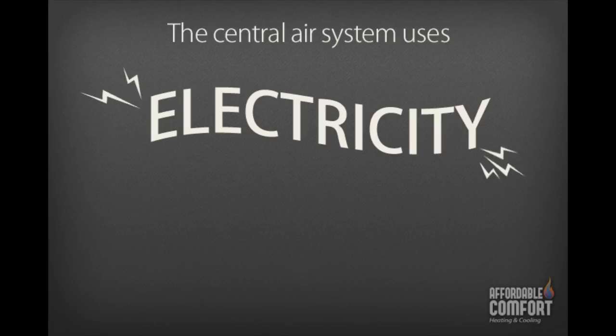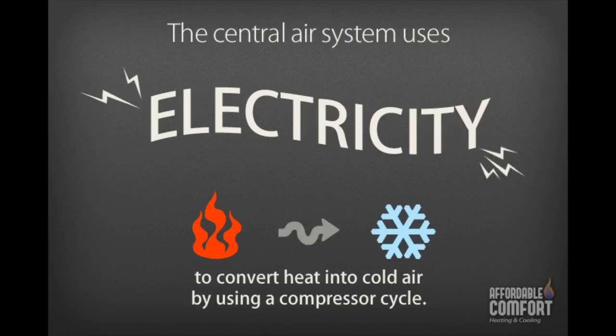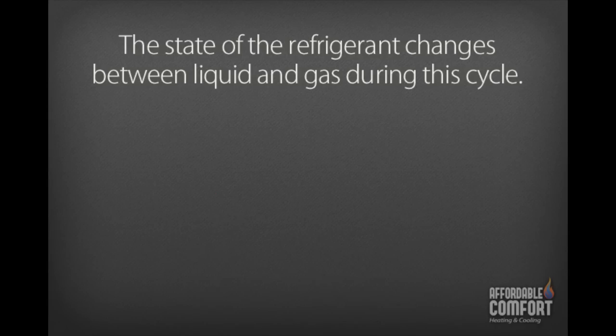The central air system uses electricity as its main power source to convert heat into cold air by using a compressor cycle, much like a refrigerator, only in a larger space. The cycle allows heat to be transferred from the inside of the home to the outside. In this cycle, a special fluid called a refrigerant is used, whereby the heat is absorbed and released as it exits the home. The state of the refrigerant changes between liquid and gas during this cycle.